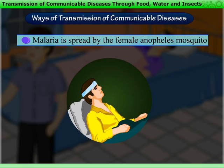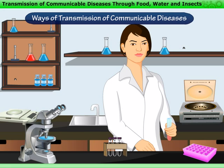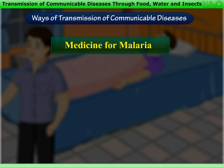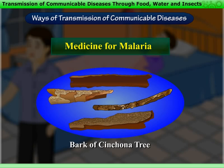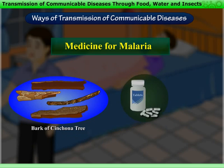The specific symptoms of malaria include fever with chills and rigors. Malaria can also be detected by performing a blood test, which confirms the presence of malaria germs in the blood of the patient. The medicine for malaria is made from the bark of the cinchona tree. Nowadays, it is available in the form of tablets.